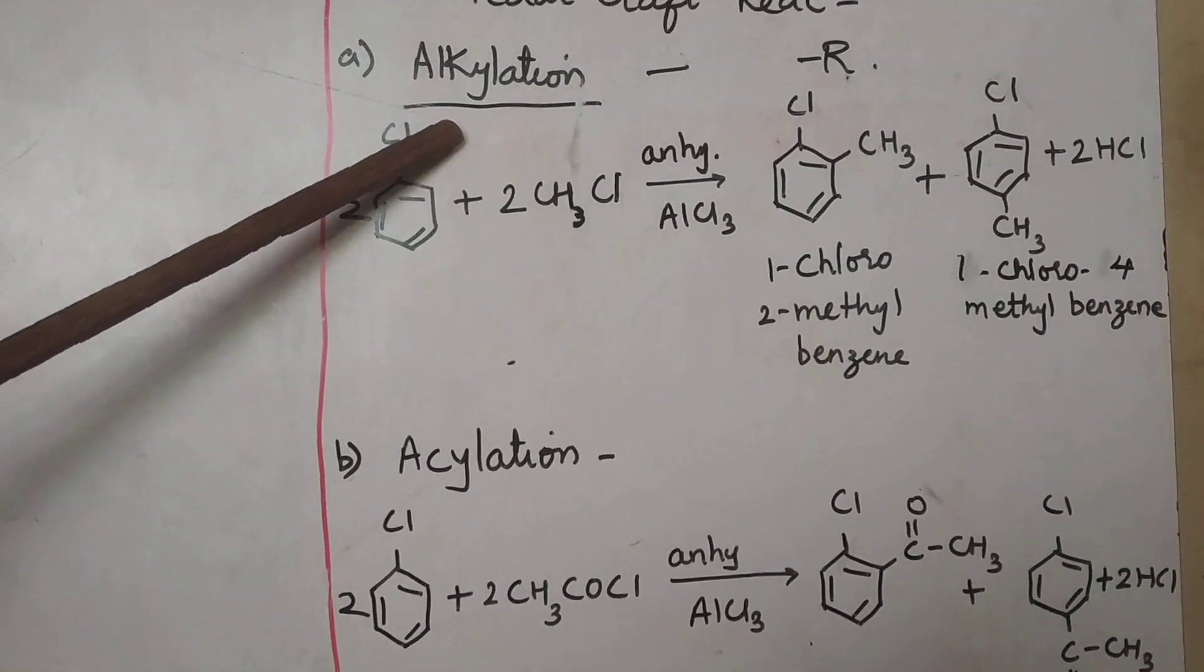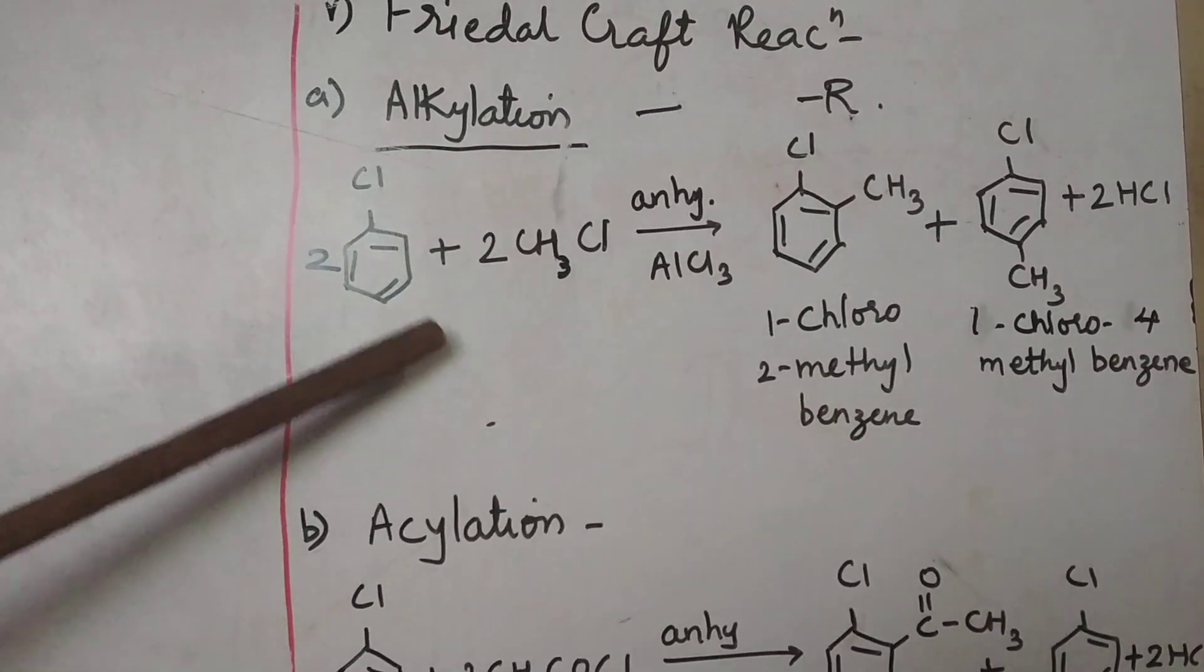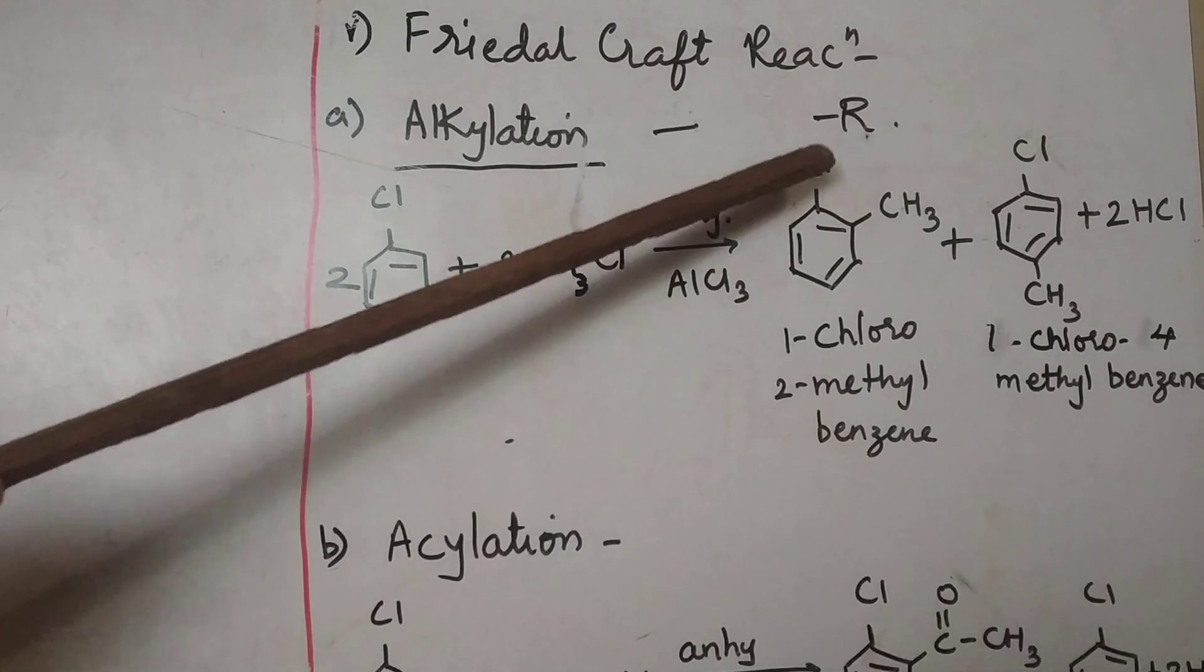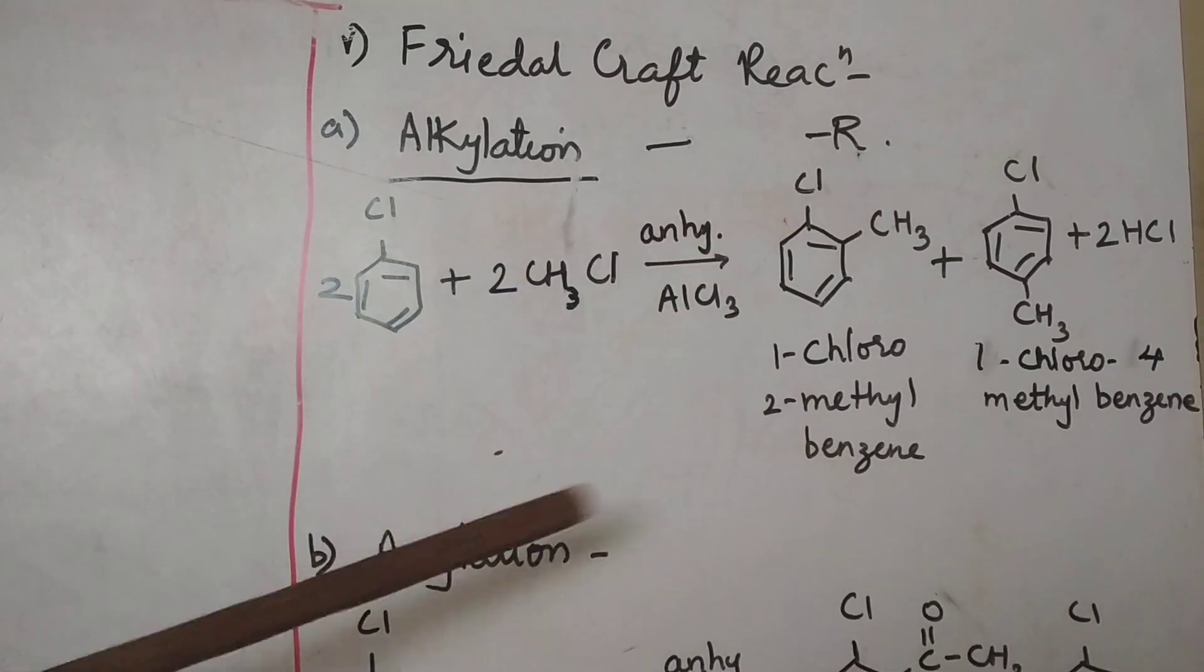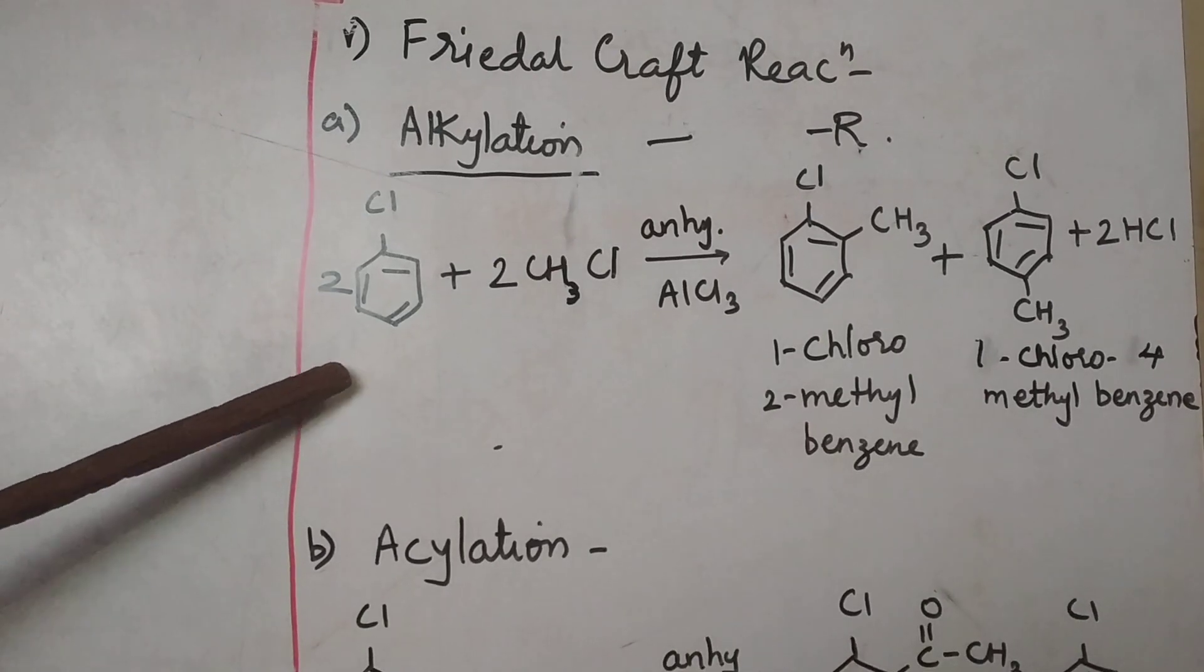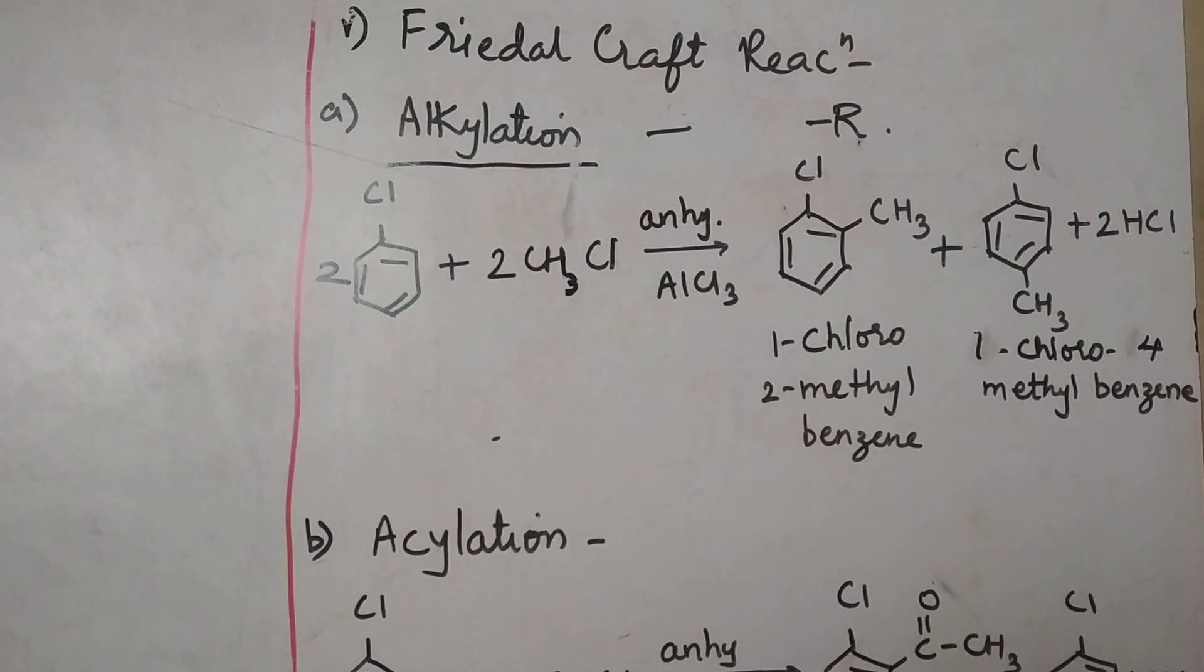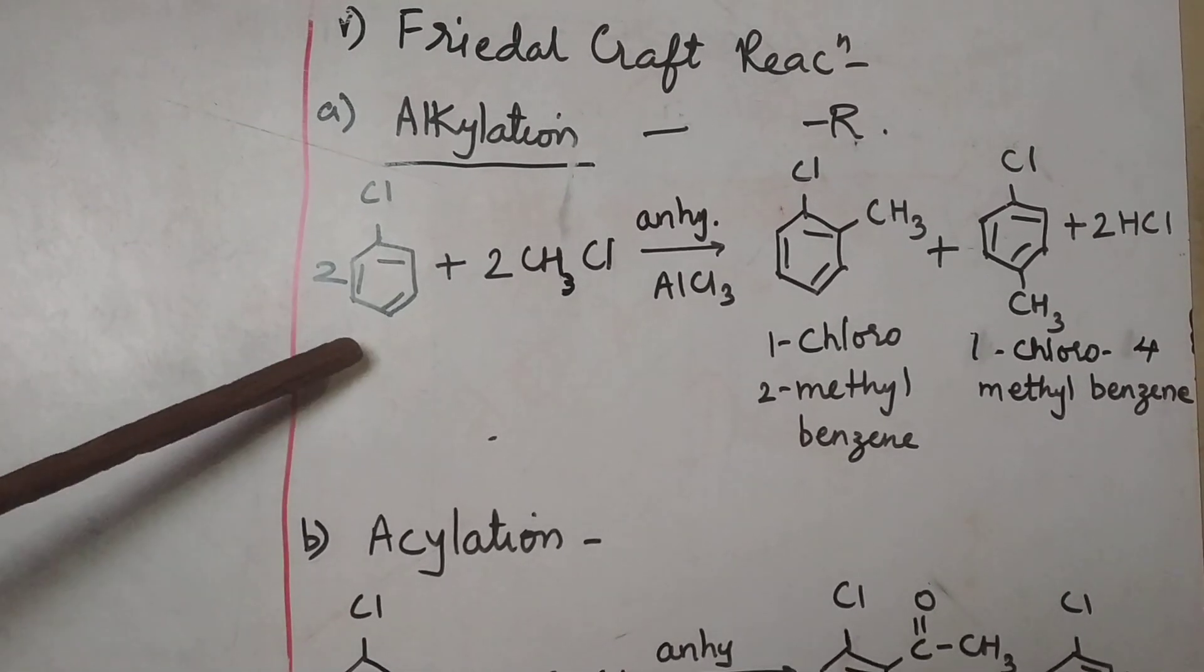In Friedel-Craft alkylation, you will find that the H atom is replaced by alkyl group that is R group. So, I have written this R group here. This reaction we have done for benzene in 11th standard. You can refer in the notebooks. This is chlorobenzene.